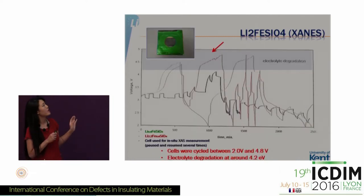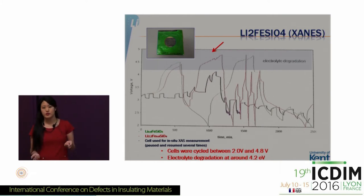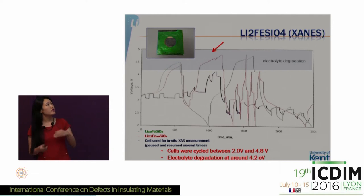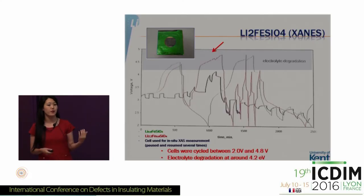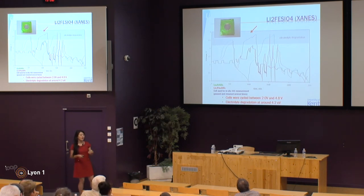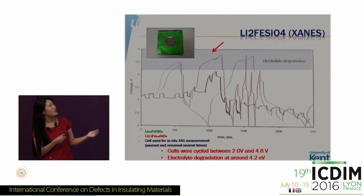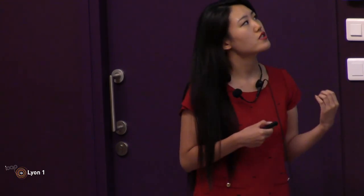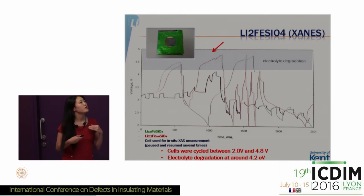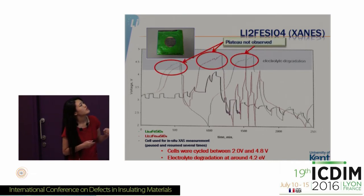Moving on to our research, we did pretty much the same as Rubert Domenico and de Groot, but we used two different lithium iron silicate samples: standard Li2FeSiO4 used by other groups, and a lithium-rich Li2.2FeSiO4. Our idea was that more lithium cycling could increase the voltage, potentially enabling the Fe3+ to Fe4+ oxidation step. We used a pouch cell for in-situ XANES measurement, but during battery cycling we only observed electrolyte degradation rather than further lithium extraction, and the expected plateaus were not observed.